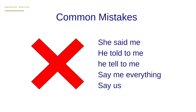'Say me everything' — cuéntame todo — is also a mistake due to literal translation. We would say 'tell me everything'. And 'say us' or 'they said us' is wrong — the correct form is 'they said to us' or 'they say to us'. Make a note of that and try to avoid making those mistakes.